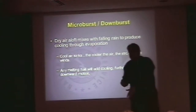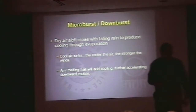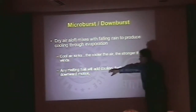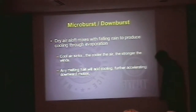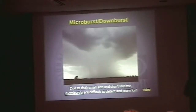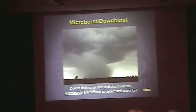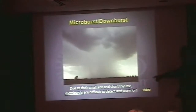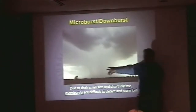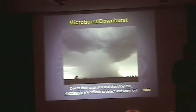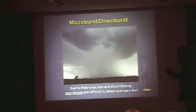So your wind at the ground is not 80 miles an hour — it's 95 miles an hour, knocking your trees over. Melting hail also will cool the air. Downbursts can be wet, like this one — this is called a wet microburst.